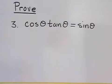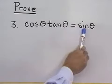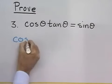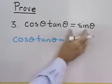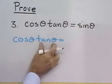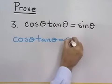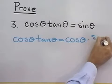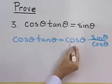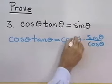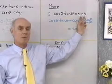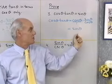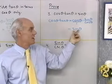Let's try another problem: prove that cosine theta times tangent theta is always equal to sine theta. I'll start with the left side and turn it into the right side. Cosine theta times tangent theta — since tangent theta equals sine theta over cosine theta, I write this as cosine theta times sine theta over cosine theta. The cosine theta in the numerator and denominator cancel, and the result is just sine theta. I've taken the left side and turned it into the right side using basic identities and algebra.